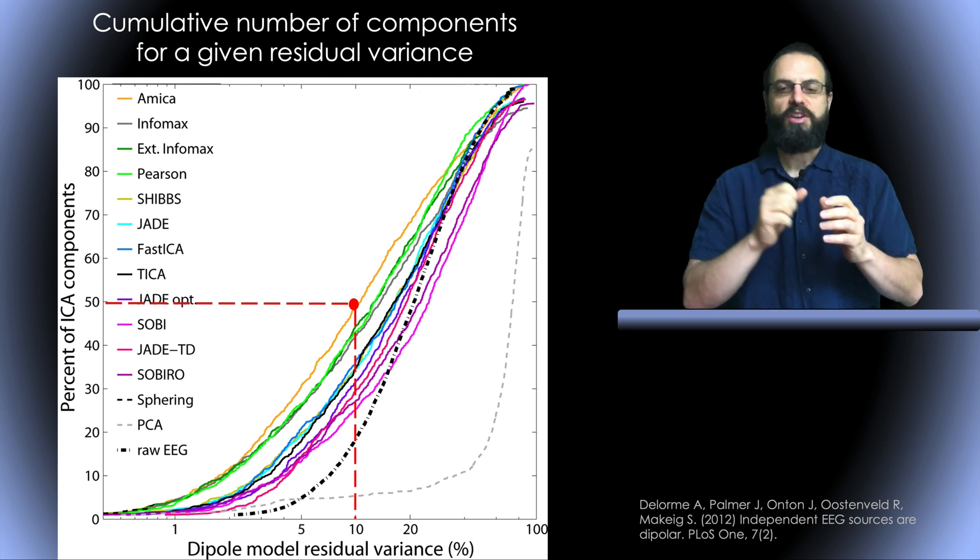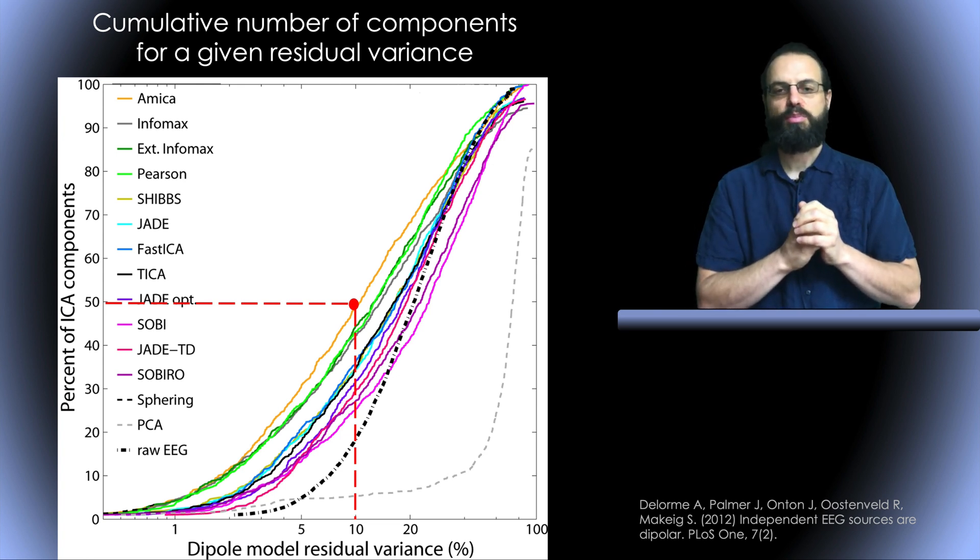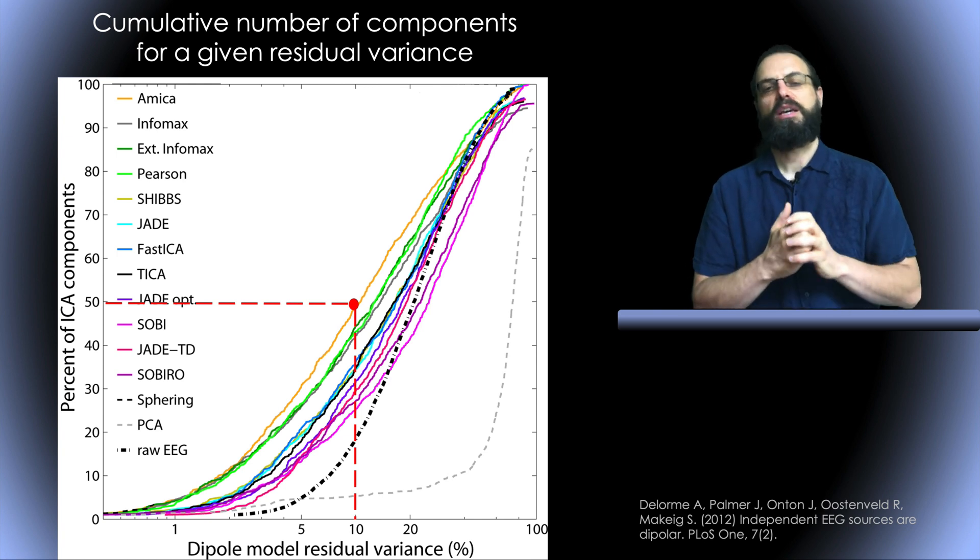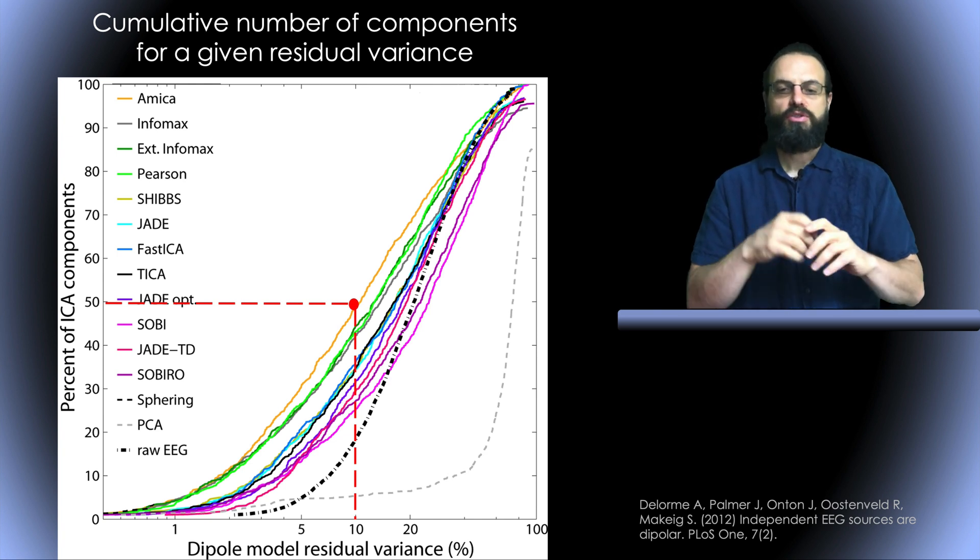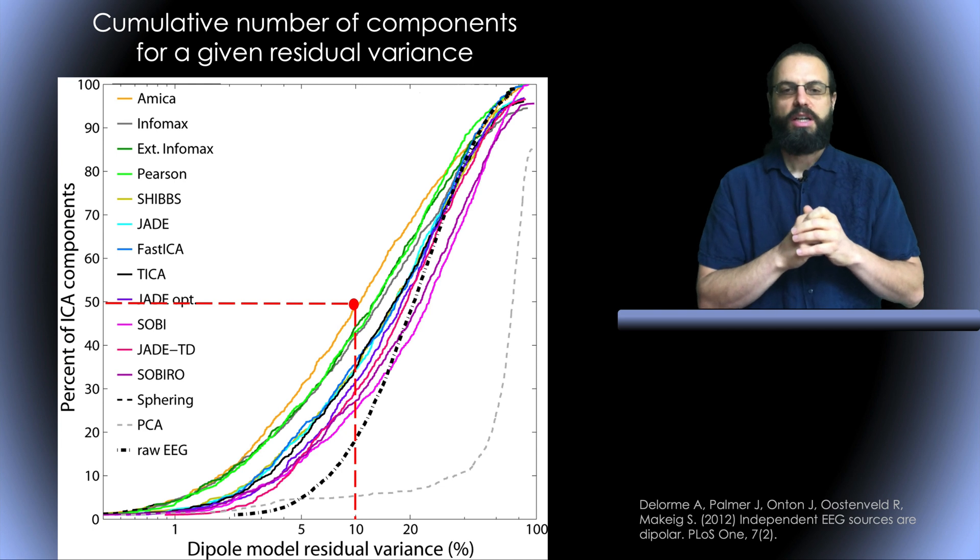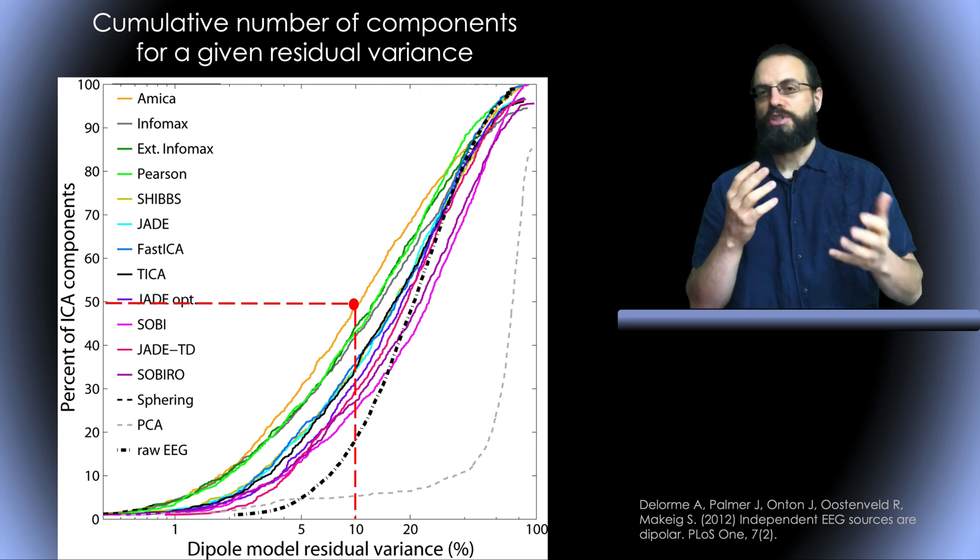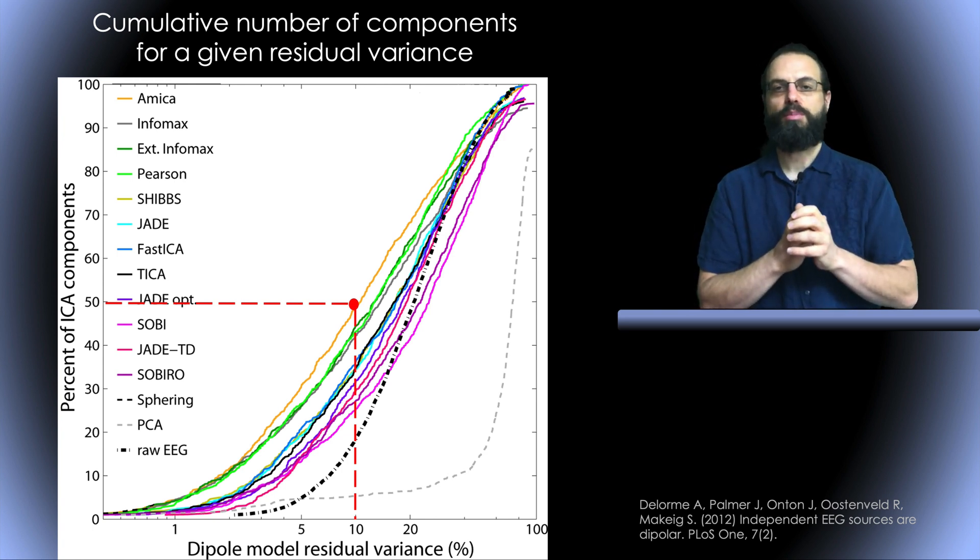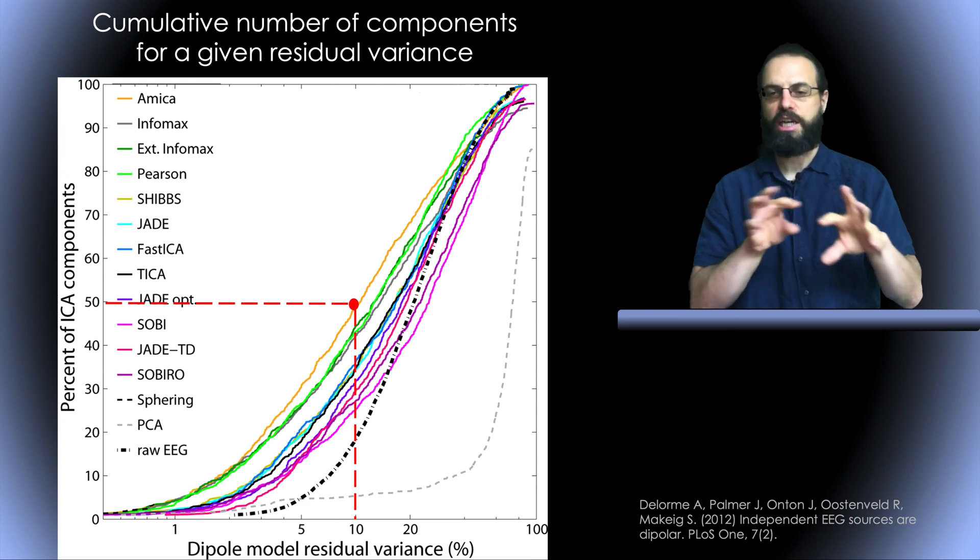The other algorithms don't perform as well in the sense that they don't have as many dipolar components. Two curves are also interesting here. The PCA curve, the principal component analysis, you can see that it's on the bottom, except for the first and maybe the second PCA component. The other ones look like checkerboards, so they can't really be modeled using single sources.